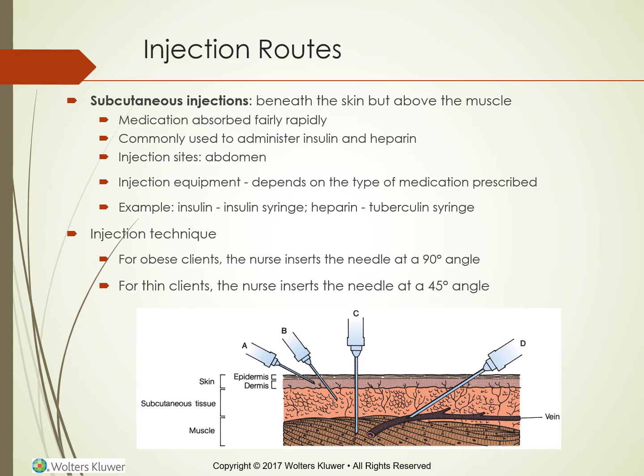Subcutaneous injections go beneath the skin but above the muscle. The medication is absorbed fairly rapidly and is commonly used to administer insulin and heparin. One injection site is the abdomen. Equipment depends on the medication — use an insulin syringe only for insulin; for heparin, a tuberculin syringe may be used. For obese clients, insert the needle at 90 degrees; for thin clients, at 45 degrees.